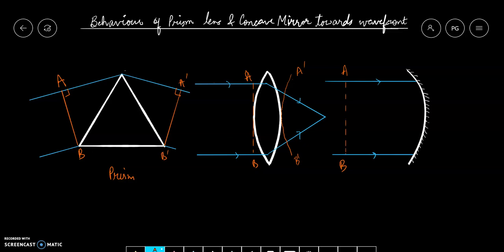Similarly in case of a concave mirror, parallel wavefronts are falling on it. And this concave mirror is going to converge these rays. So this will be my new wavefront A dash B dash, which are converging wavefronts.